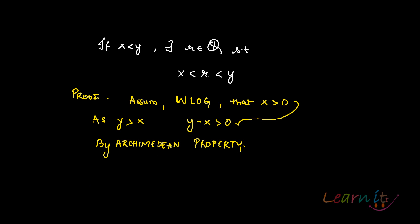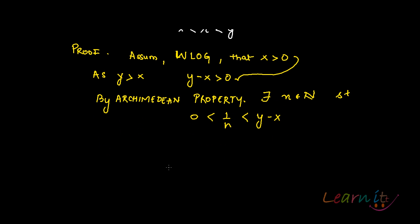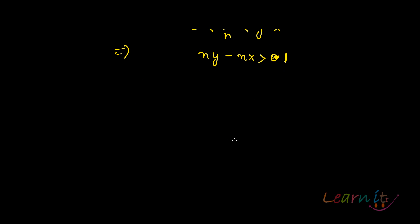By the Archimedean property, there exists a natural number N such that 1/N lies between 0 and Y minus X. Multiplying throughout by N, what do we get? We get that NY minus NX is greater than 1.